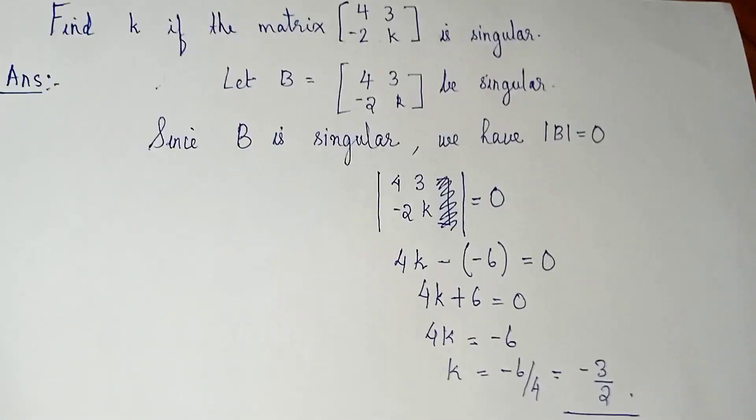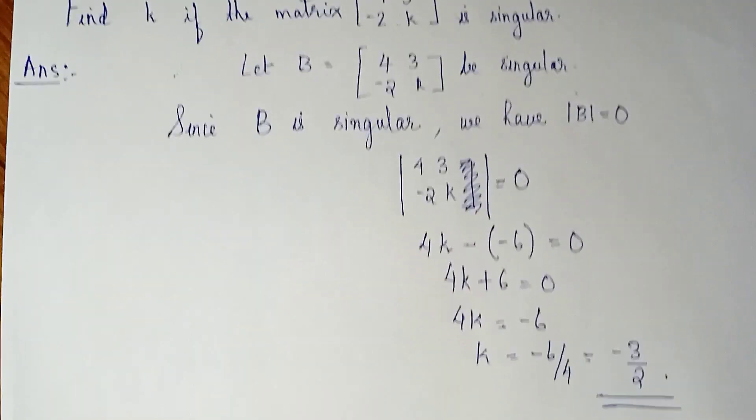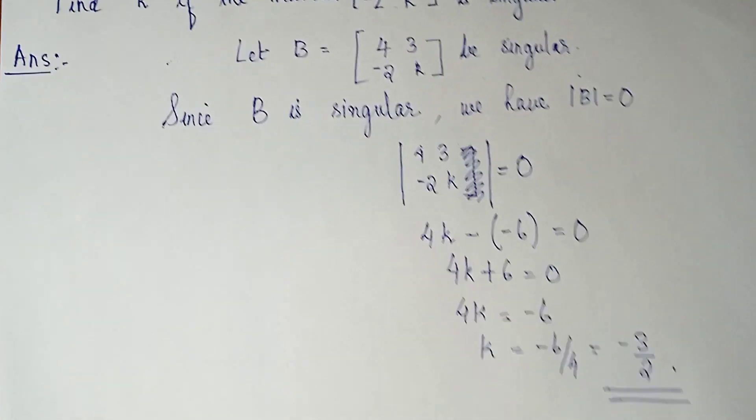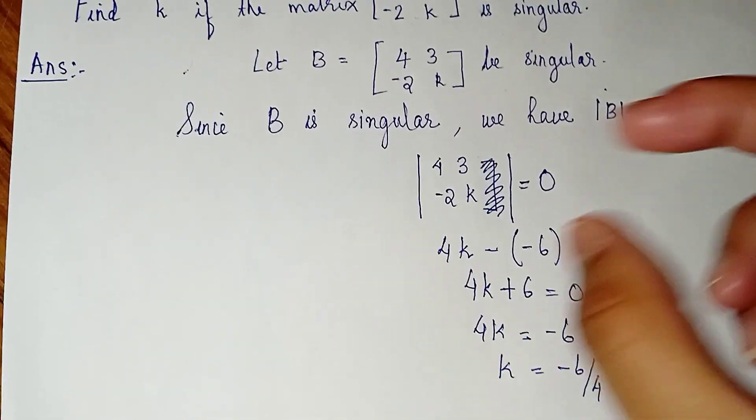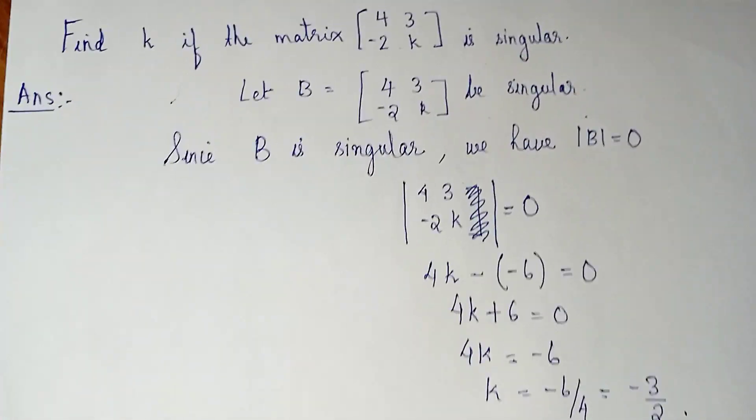So we just have to assume that the given matrix is singular. We know that the condition for a matrix to be singular is that its determinant should be equal to 0. So we equate it to 0 and then we solve. We found the value of k.